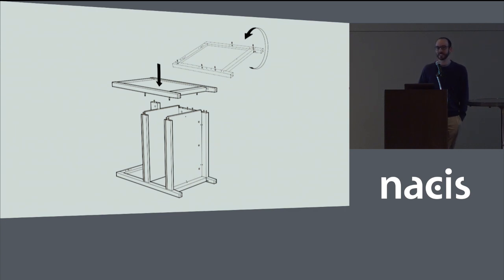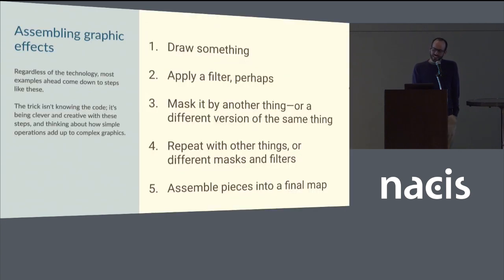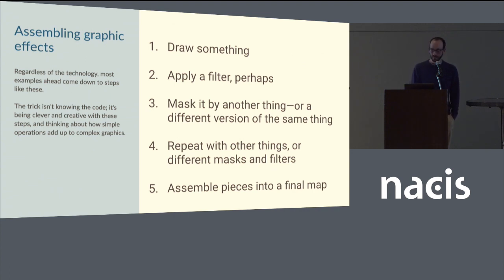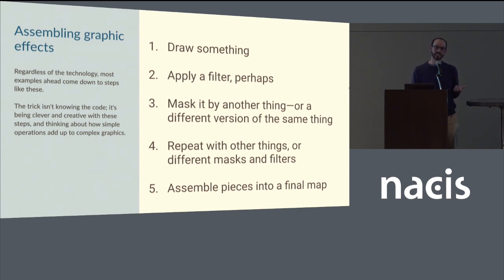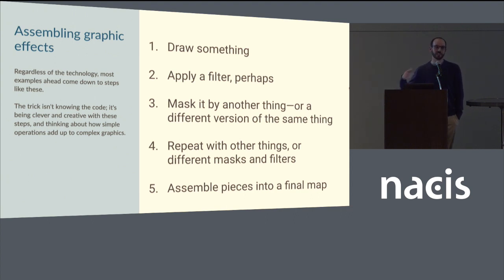Back to looking at graphics as assembly. A lot of these things, whether SVG or canvas, come down to a general set of steps: you're drawing something, maybe you apply a built-in filter, you might mask it by another thing or a different version of the same thing, and do that repeatedly. Combine all these things together for the final product. Once you've got the syntax and algorithms down, that's where your amazing cartography brain comes in — extrapolating to whatever designs you can imagine.